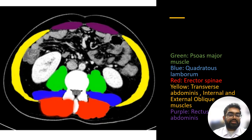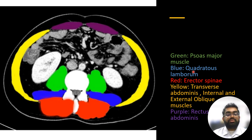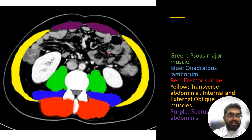Here is an image of CT at the L3 vertebral level. The green area represents the psoas major muscle. Blue represents the quadratus lumborum muscle. Red area represents the erector spinal muscle. The yellow area represents the transverse abdominis, internal and external oblique muscle. And lastly, the purple area represents the rectus abdominis muscle.